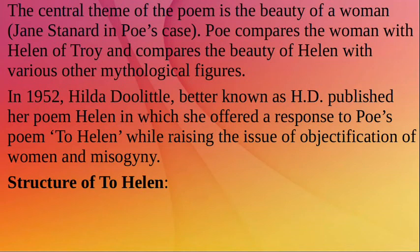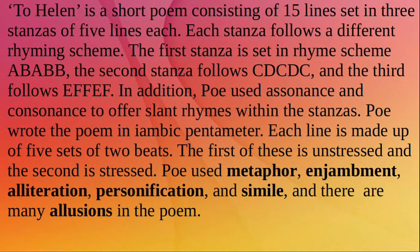To Helen is a short poem consisting of fifteen lines set in three stanzas of five lines each. Each stanza follows a different rhyming scheme: the first stanza is set in rhyme scheme A-B-A-B-B, the second stanza follows C-D-C-D-C, and the third follows E-F-F-E-F.